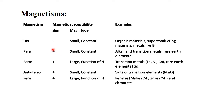Paramagnetism: susceptibility is positive and very small — alkali and transition materials, rare earth elements. Ferromagnetism: sign is positive, magnitude is large, and is a function of H (magnetic field strength). Examples are Fe, nickel, and cobalt — used generally in magnetic metals for magnets. Anti-ferromagnetism has small magnetic susceptibility, while ferrimagnetism has large susceptibility. Examples of anti-ferromagnetic materials include salts of transition elements like magnesium oxide, and examples of ferrimagnetic materials include ferrites and chromites.